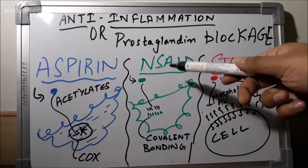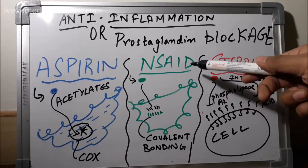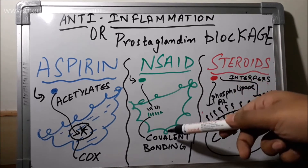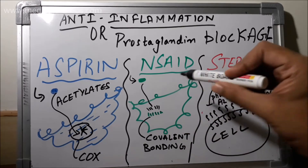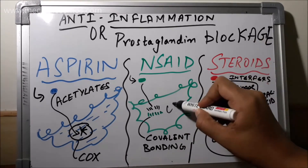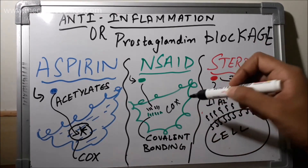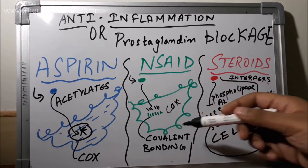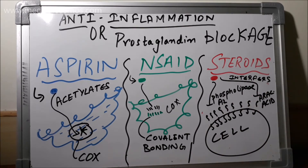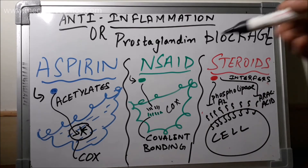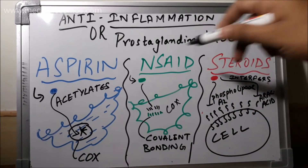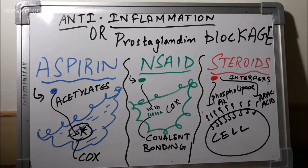The second drug, the non-steroidal anti-inflammatory drug (NSAID), acts by covalent binding with the cyclooxygenase enzyme. The drug binds covalently, thereby blocking its action and finally resulting in nil production of prostaglandins.